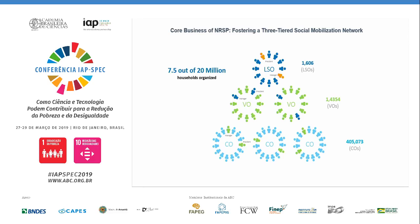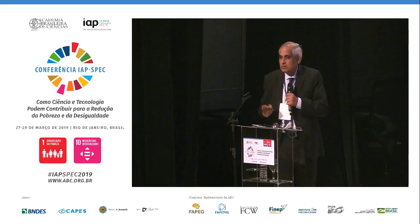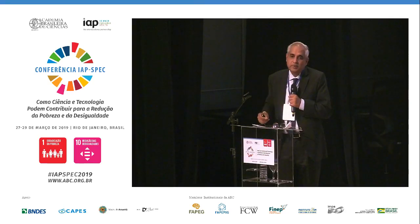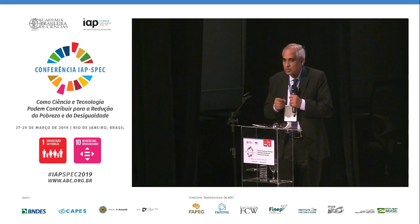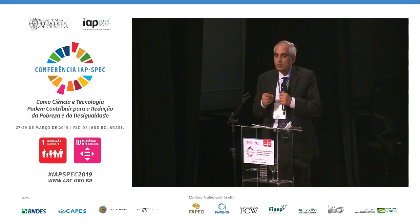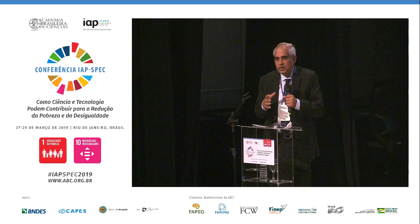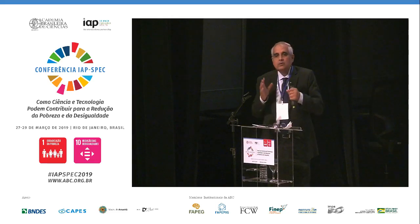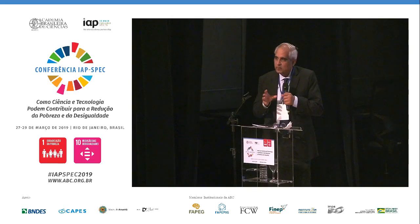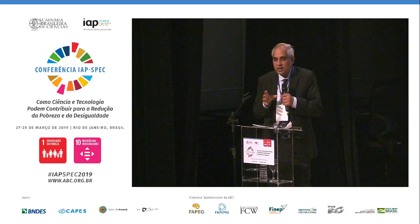Once this step was taken, it allowed us to go to each of these groups and ask a simple question: what is it that you can do to improve your life, and why haven't you been able to do that? The answer to why becomes the program. And one of the biggest things people want is access to finance, because they can't access capital to undertake the activities they want to do.